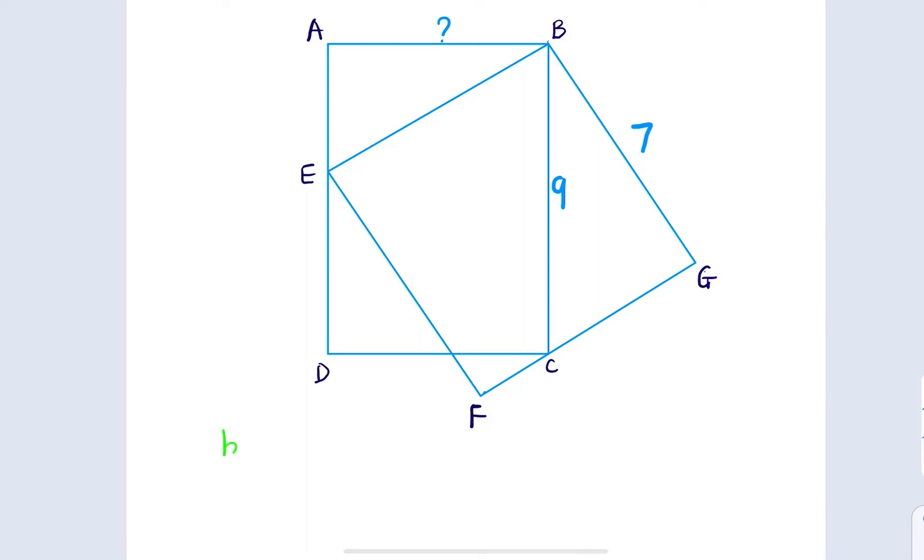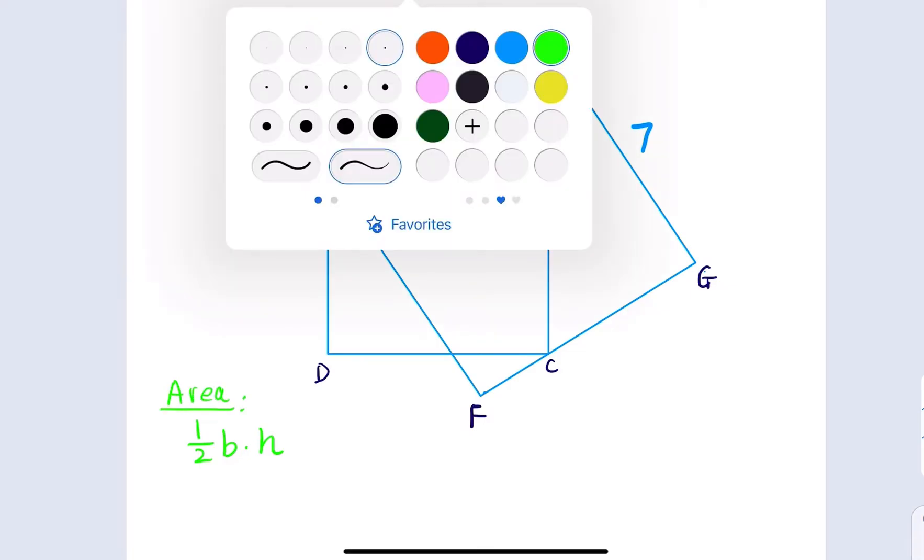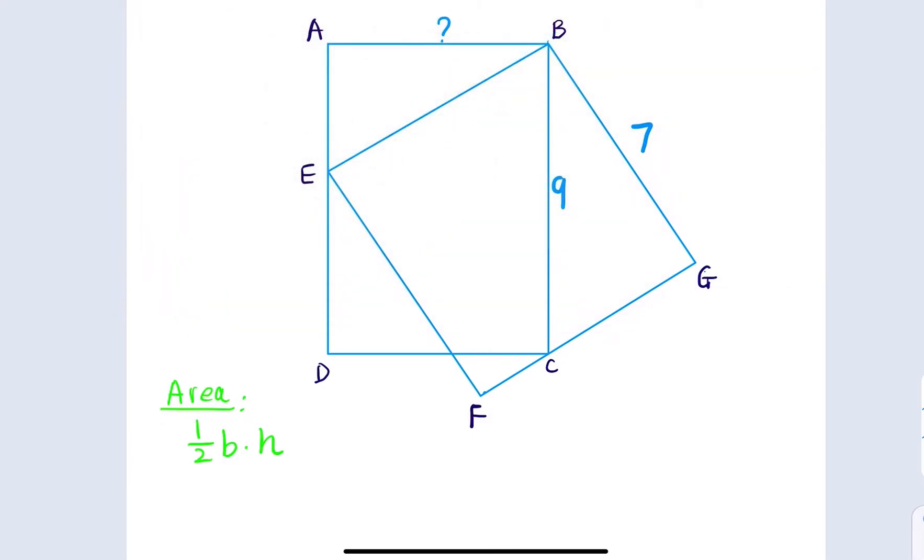Recall that the area of a triangle is base times height times one half. We're looking at this special triangle here. I'm going to mark it in red, looking at the triangle BCE.